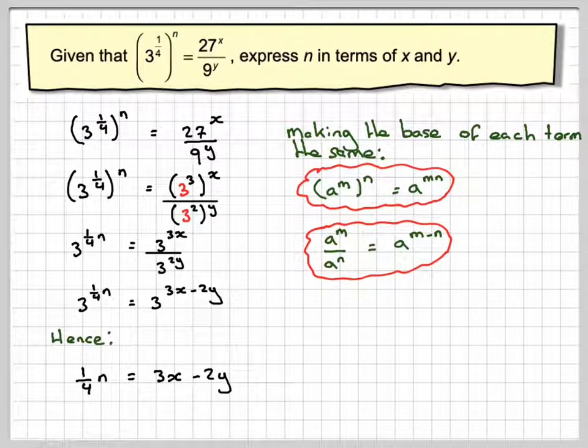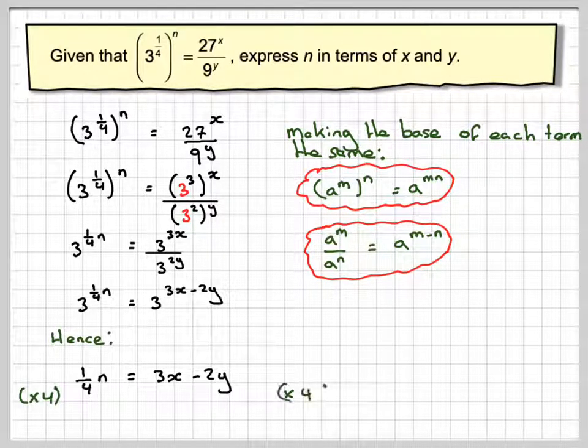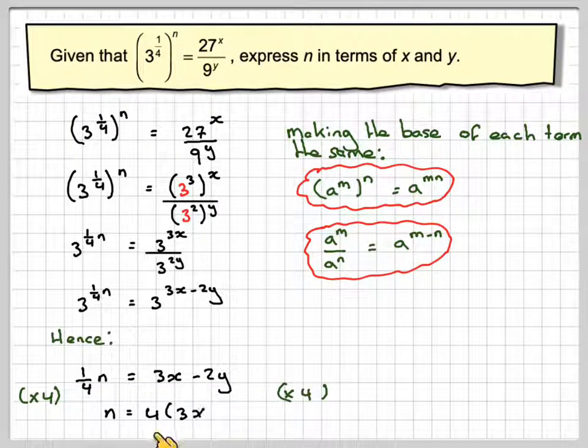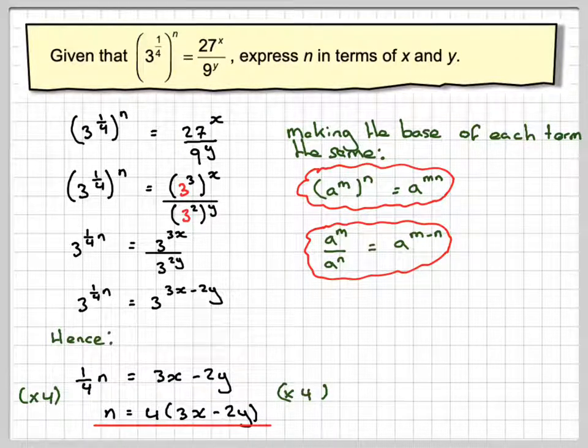And in order to make n the subject, we will need to multiply by 4. We're going to get that n is equal to 4 brackets 3x minus 2y.